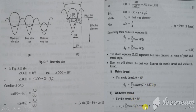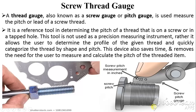A screw thread gauge, also known as a pitch gauge, is mainly used to measure the pitch or lead of a screw thread. It is a reference tool for determining the pitch of a thread on a screw or tapped hole. It is not a precision measuring instrument; rather it allows the user to quickly determine the profile of a given thread and categorize it based on shape and size, saving time and removing the need to manually calculate the pitch.